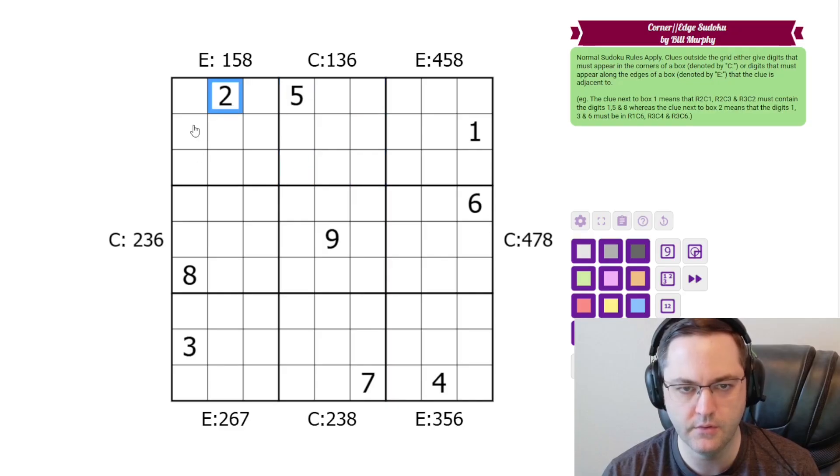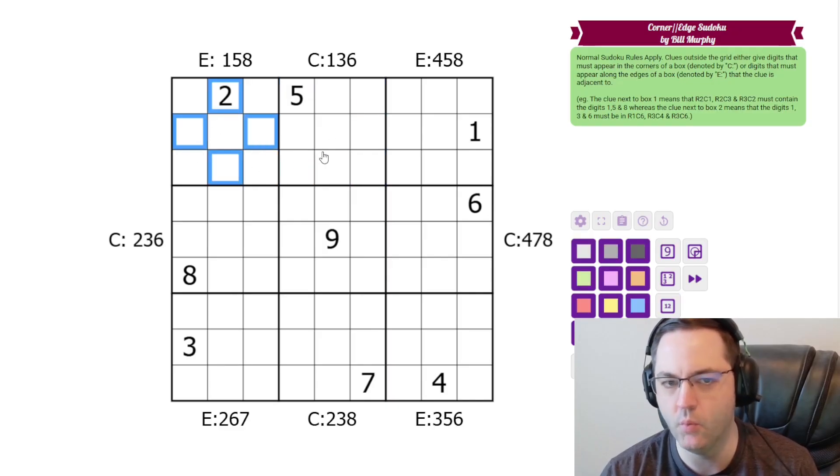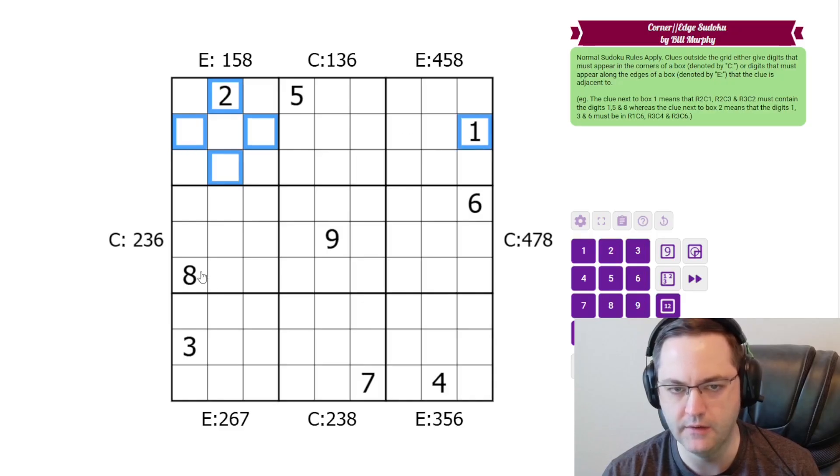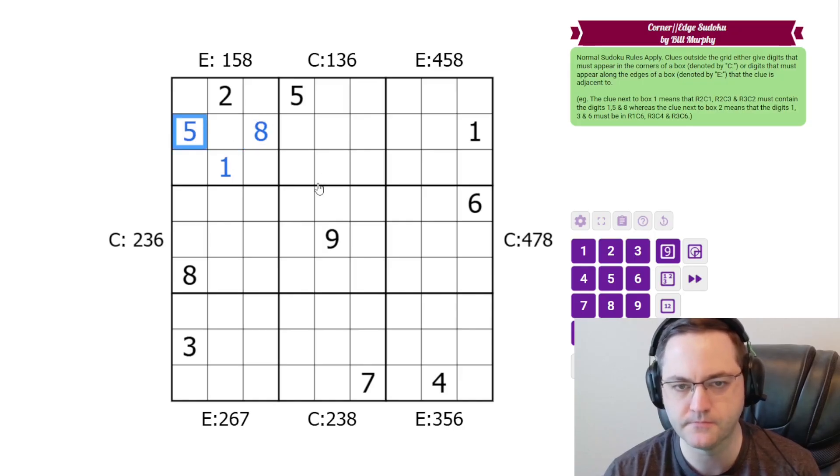So let's get started with box 1. We need 1, 5, and 8 in edge cells in this box. And we have a given 1 here and a given 8 here. So the 1 has to go here, the 8 has to go here, and 5 has to go here. This is 4, 5, 8. We have a 4 down here. And then the 5 is going to resolve 8 and 5 here.